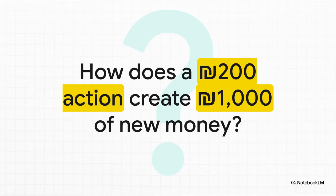Here's the big question, the puzzle we're going to solve together. How on earth does a 200 shekel move by the central bank end up creating 1,000 shekels of new money out of thin air? It sounds kind of like a magic trick. But by the end of this, you're going to see exactly how the sausage is made — you'll get the mechanics behind this incredible multiplication.